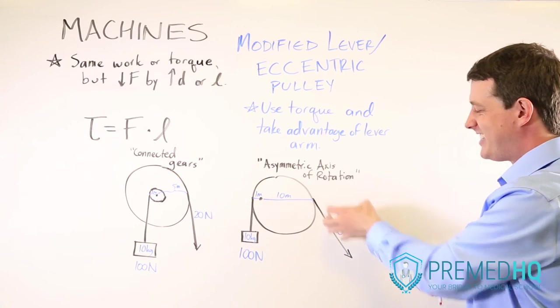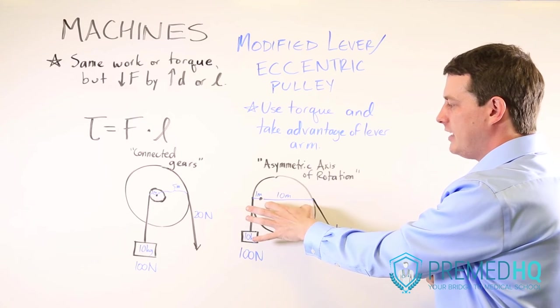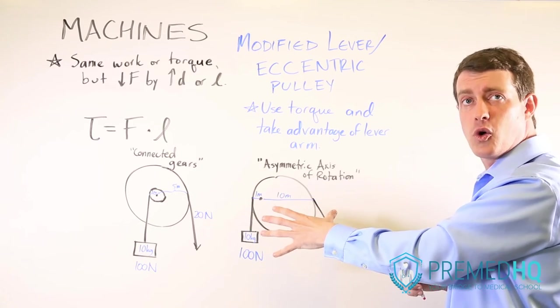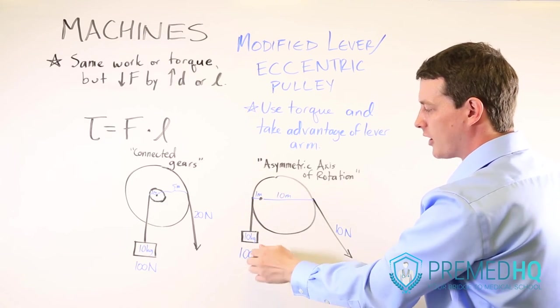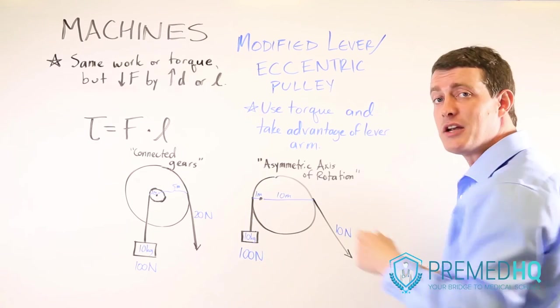So you put in 10 newtons of force pulling this way. You multiply that by the 10 meters, and that's going to give you 100 units of torque, just the same as the output torque, which is 100 newtons this way, times the one meter.